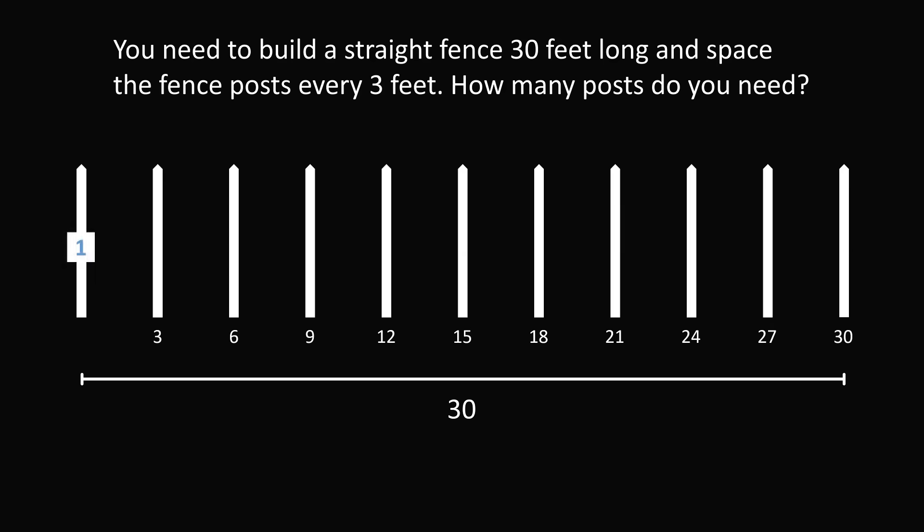Now we just need to count out how many fence posts there are in total. We start with the first post, which is 1, and as we keep counting, we're going to get up to a total of 11 posts. The mistake is that people don't realize the first post corresponds to a distance of 0. So you actually need 1 more than 10, which is a total of 11 posts.